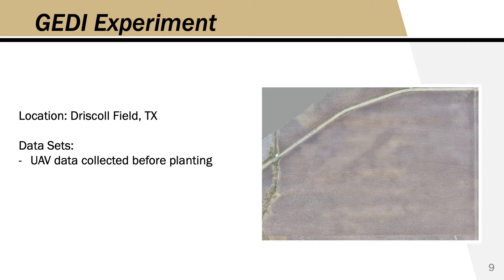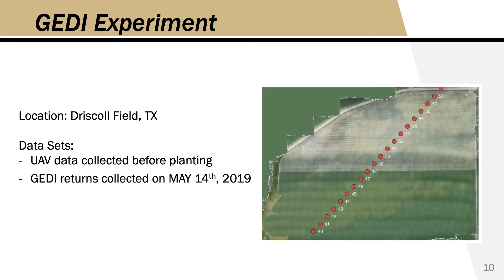Now let's look at data in an agricultural setting. The first dataset is a DSM collected from a UAV over a field in Driscoll, Texas prior to planting, showing the bare soil — this gives us the ground elevation. The second dataset is GEDI, which passed over on May 14th, 2019. The field on that day was growing two different crops: to the north, cotton, which is quite small with a lot of open ground, and to the south, sorghum, which is tall and fairly dense.